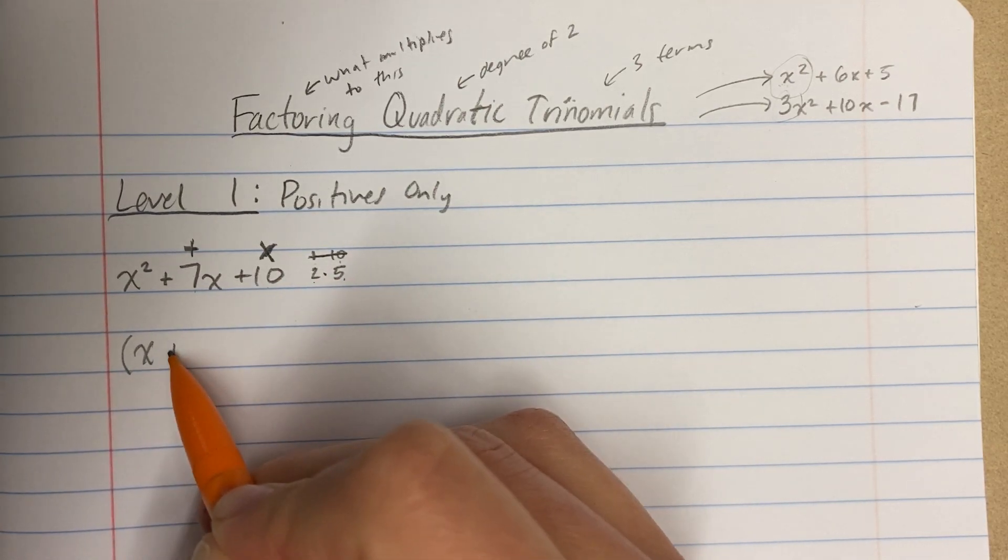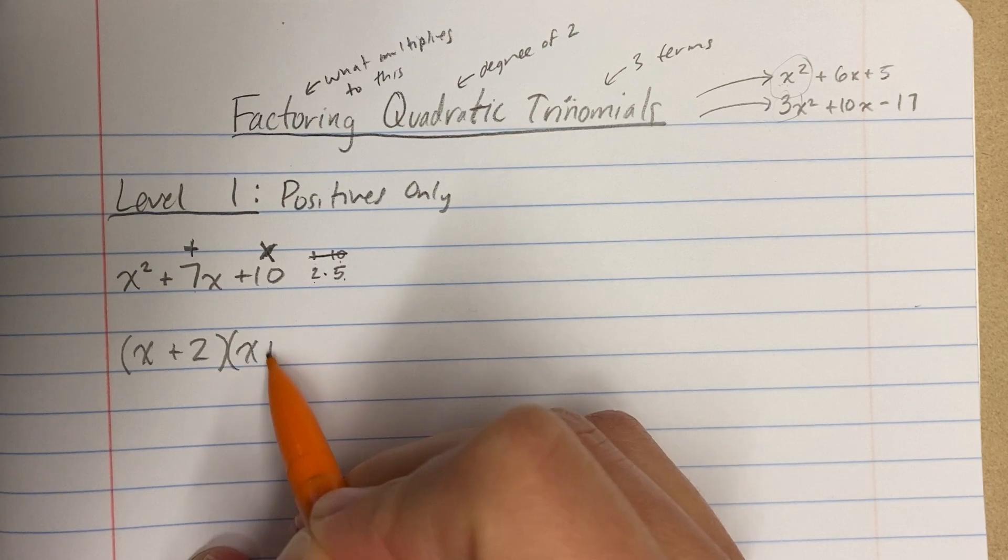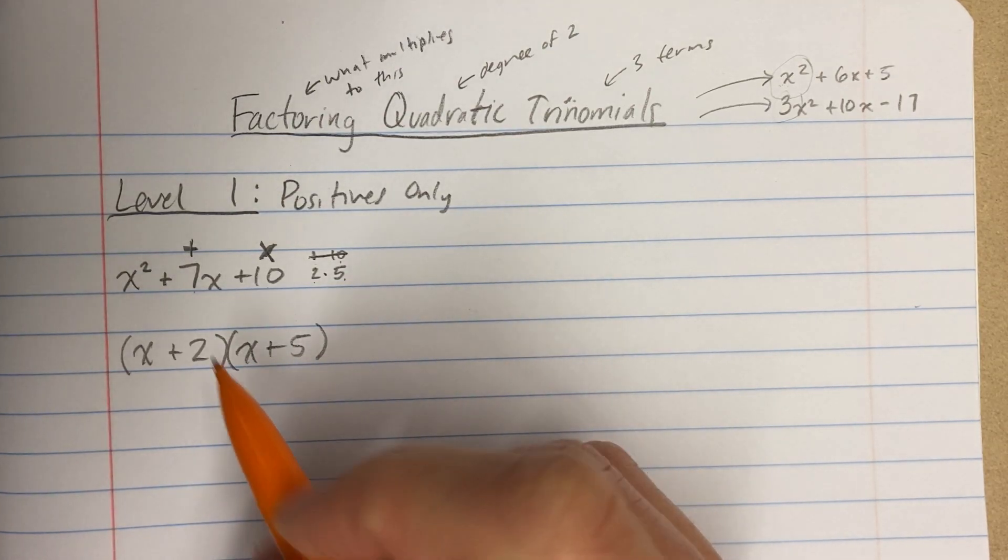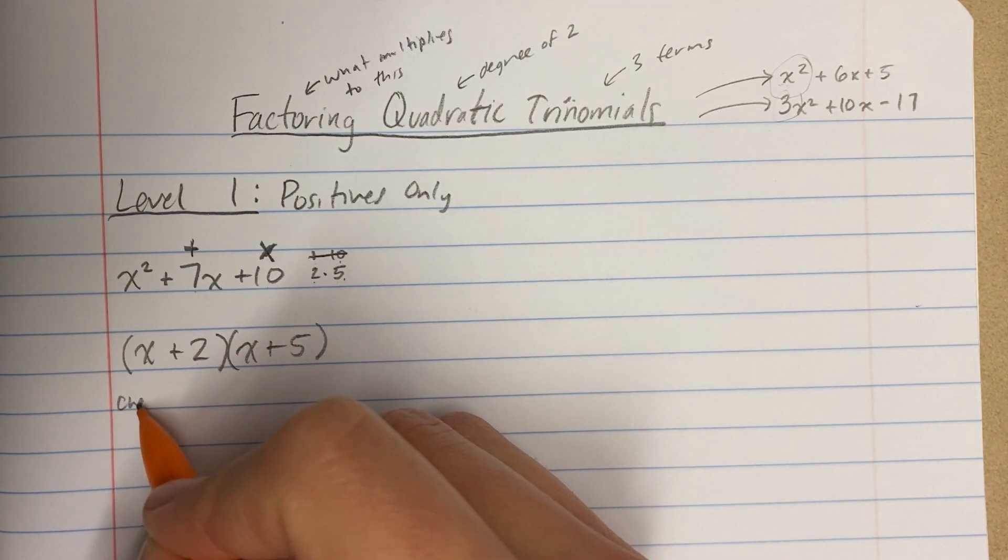So then those are my two numbers. x plus 2 times x plus 5. It could have been 5 here and 2 here. It doesn't matter. And then, look, let me just, I'm going to check my answer.